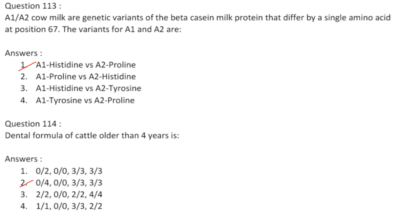A1 and A2 cow milk are genetic variants of the beta-casein milk protein differing by a single amino acid at position 67. The difference between A2 and A1 beta-casein is a single nucleotide substitution resulting in a proline to histidine substitution at the 67th residue of the 209 amino acid chain. So A1 is histidine and A2 is proline. Answer is option 1.